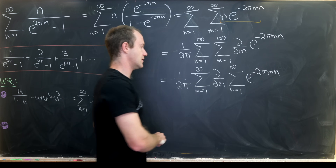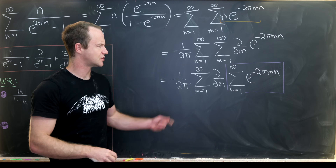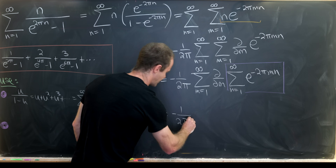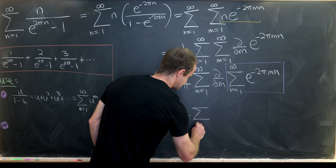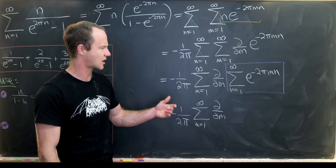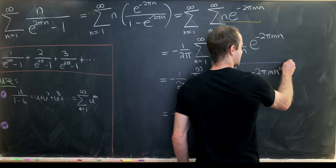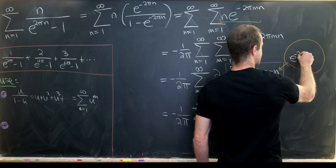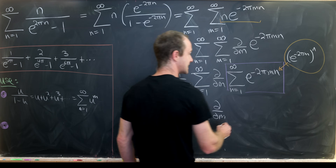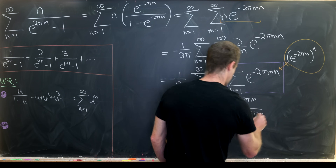The inner sum over n can be summed using the geometric series again. The common ratio is e to the minus 2πm — written clearly as e to the minus 2πm all raised to the n power — summed from n equals 1 to infinity. That gives e to the minus 2πm over 1 minus e to the minus 2πm. Multiplying numerator and denominator by e to the 2πm simplifies this to 1 over e to the 2πm minus 1.